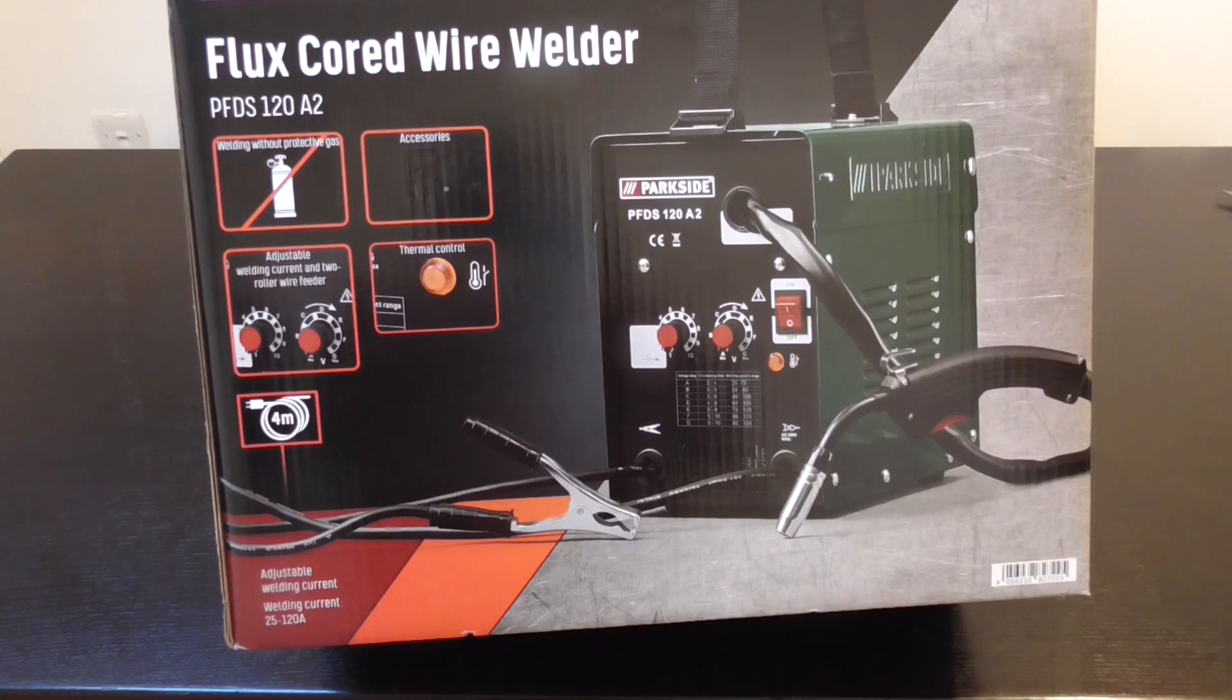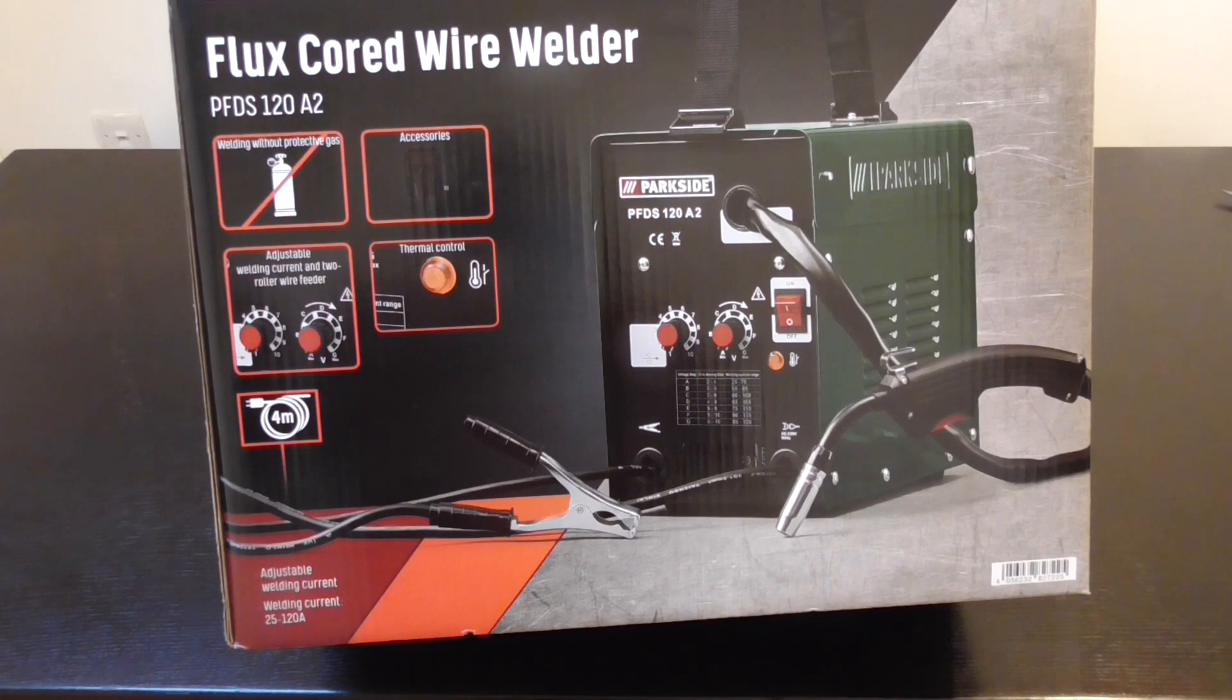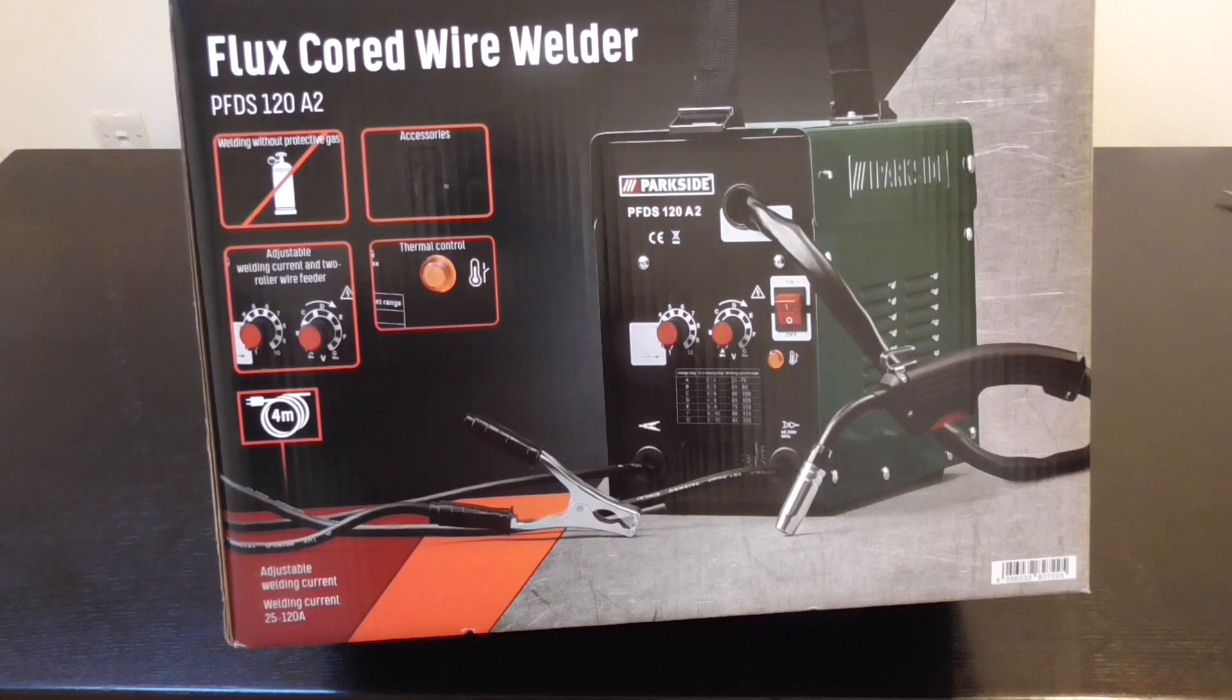The package contains 0.45 kilograms of welding wire, a burner nozzle, four welding nozzles, a welding protection shield, and a chipping hammer with a wire brush.